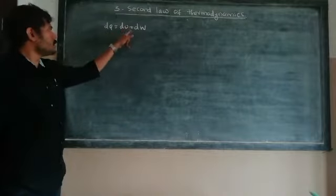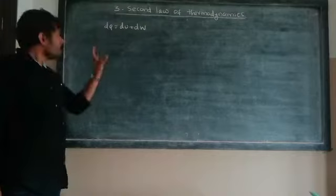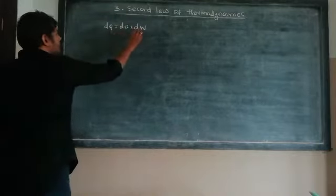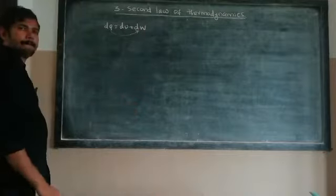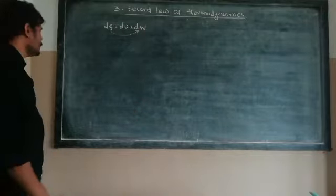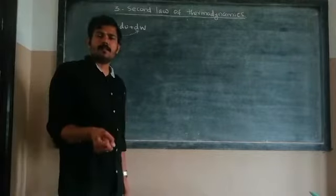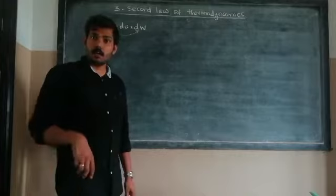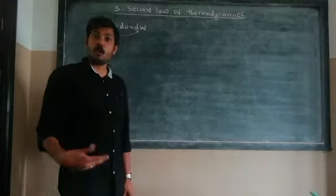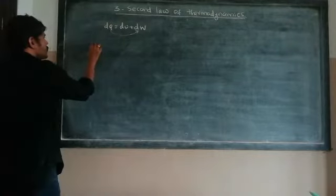So dU = dQ + dW. This law of thermodynamics says that work done on the system can be converted into heat.